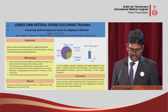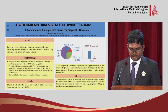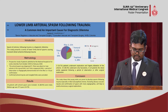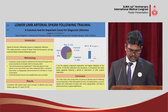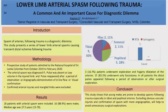We found 18 patients with arterial spasms. Among them, 16 were males and the median age was 27.5 years. We found spasms mainly in tibial vessels — 50% of cases in the distal vessels. Next was the popliteal artery at around 20%, then femoral and ileal vessels.